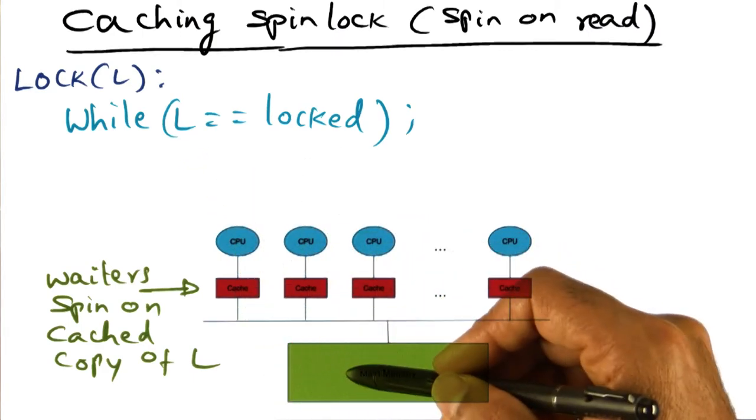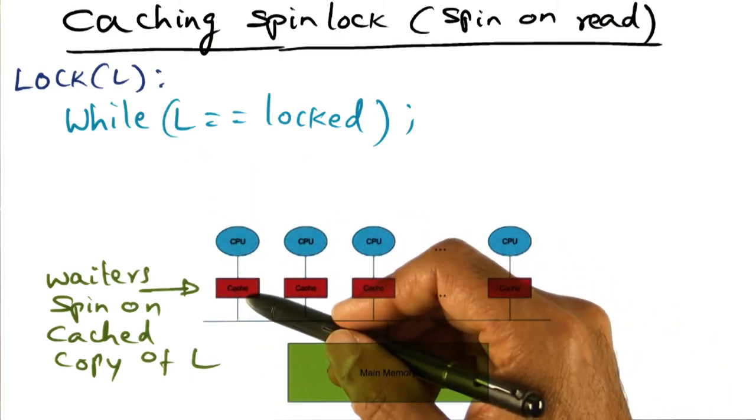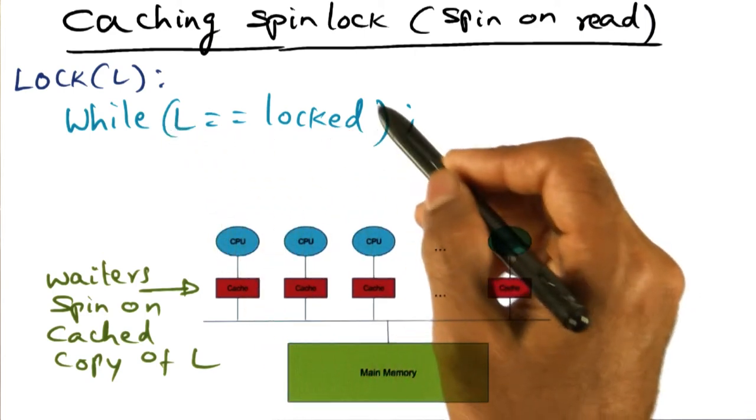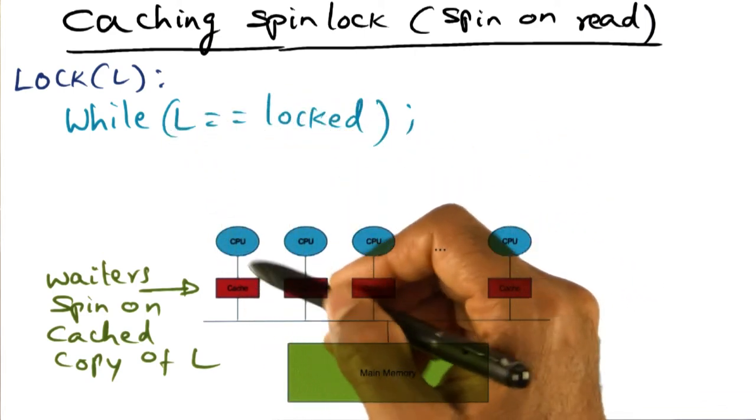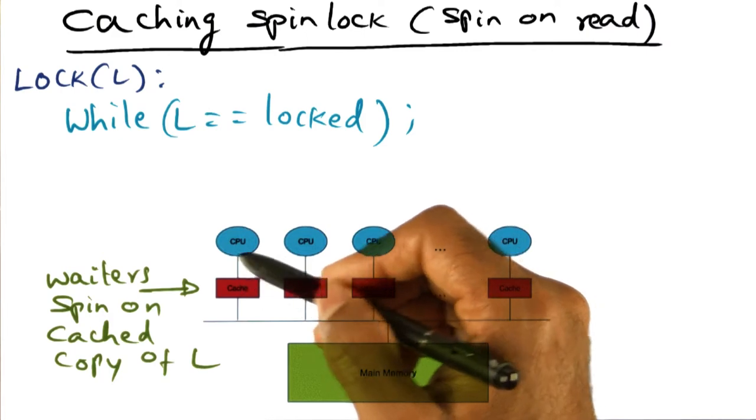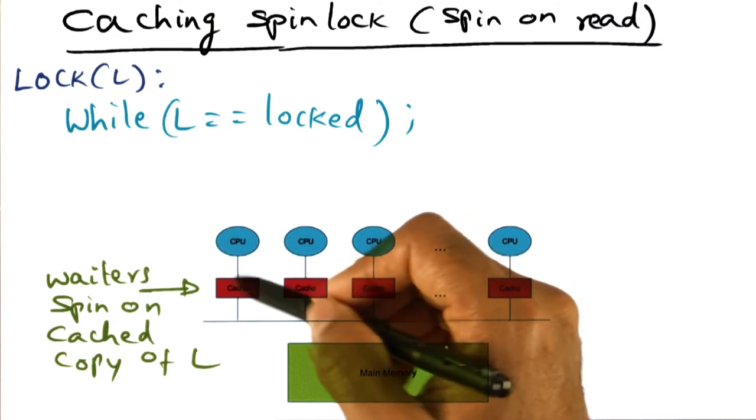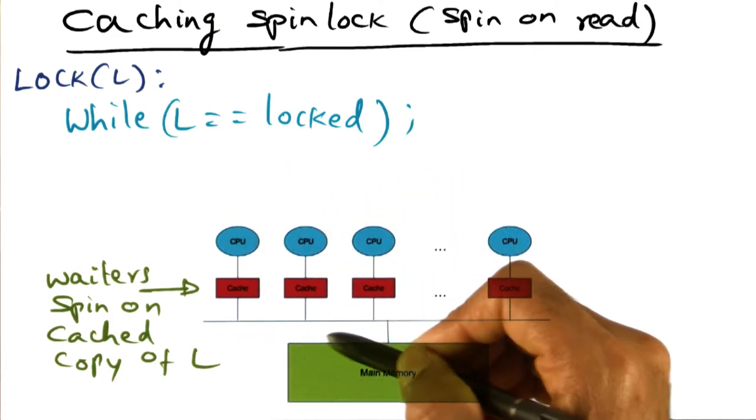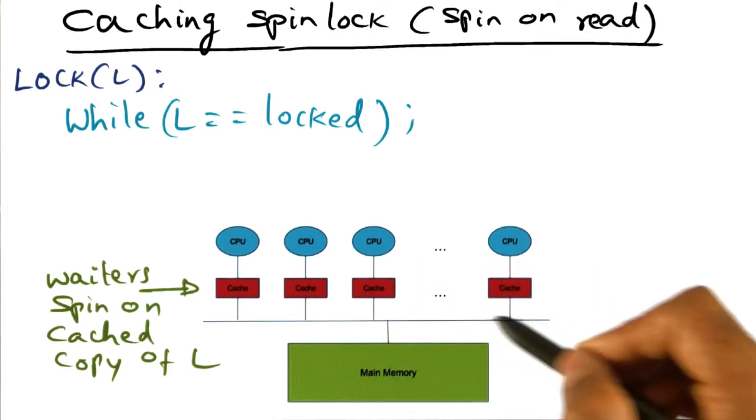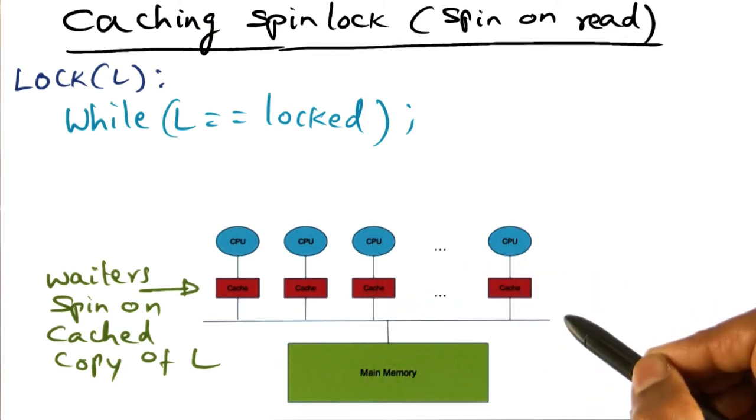So if it is not in the cache, you're going to go to memory and bring it in. And once you bring it in, so long as this value doesn't change, we're going to be looking at the value that is in my cache in order to do the checking. And I'm not going to go to the bus, and therefore I'm not producing any contention on the network.